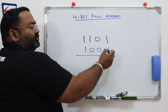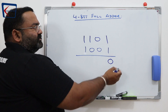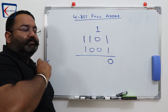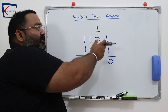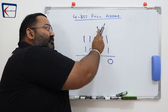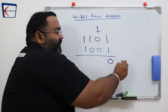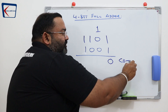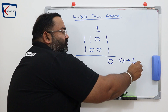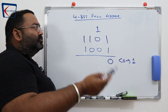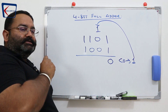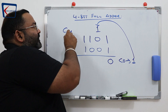When I add 1 plus 1, 0 is the sum and 1 is the carry. This carry will be used as a carry-in to the next bit. So after adding these two bits, the carry out was 1. This carry out becomes carry-in to the next bit.